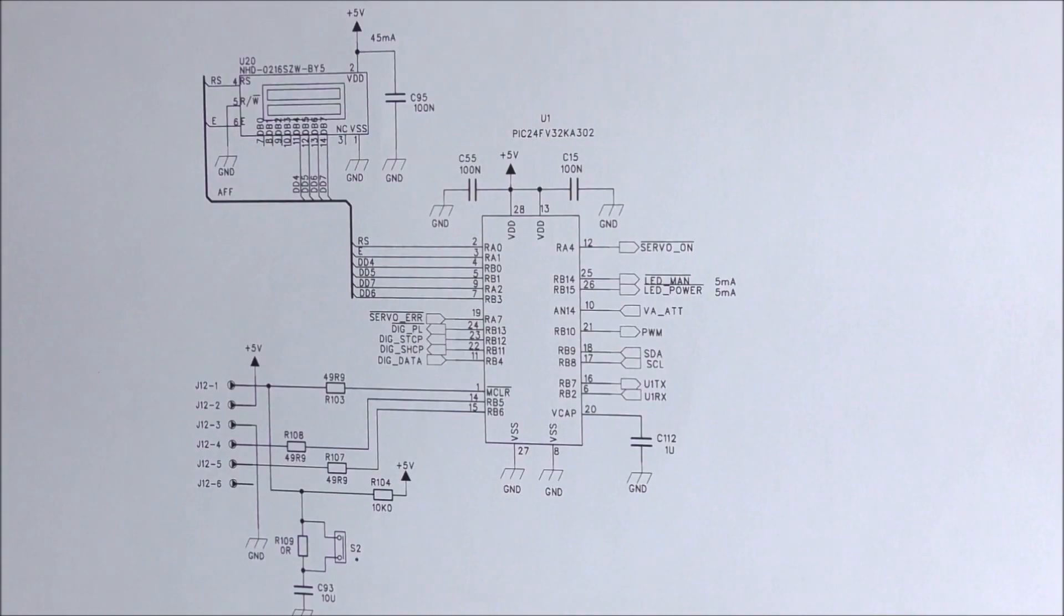The last page concerns the microcontroller. You can see the OLED display here. The programming interface and various inputs and outputs. So you can see the SPI bus for the digitizer. These four lines here.